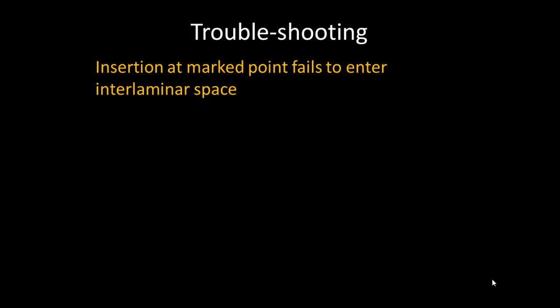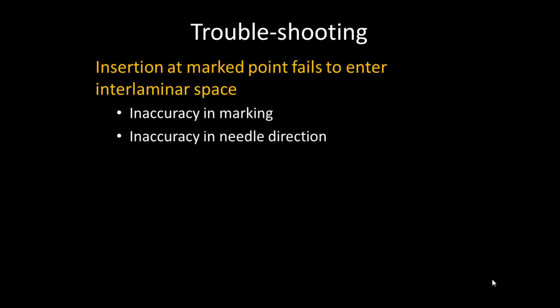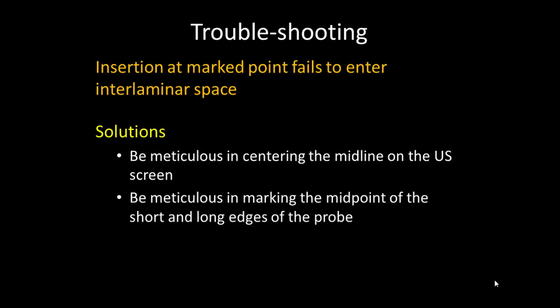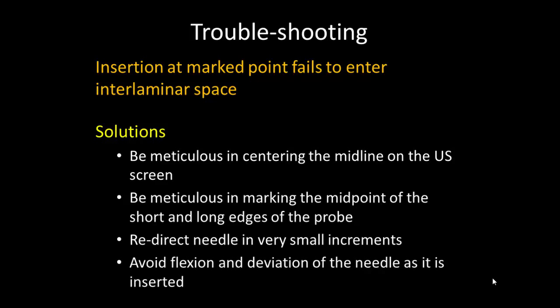Failure of the needle to enter the interlaminar space at the marked point is commonly due to two factors: inaccuracy in skin marking and inaccuracy in needle direction. Skin marking accuracy can be addressed by being meticulous about centering the midline on the ultrasound screen and meticulous in marking the midpoint of the short and long edges of the probe. If bone is encountered, any redirection should be made in a cephalad direction first but in very small increments. If bone is consistently encountered at the same depth, it may represent contact with the lamina and not the base of the spinous process, in which case the needle has deviated off the midline. This can be due to inaccurate skin marking, but it is also important to handle the needle carefully and avoid flexion and deviation of the needle from its intended trajectory as it is inserted.